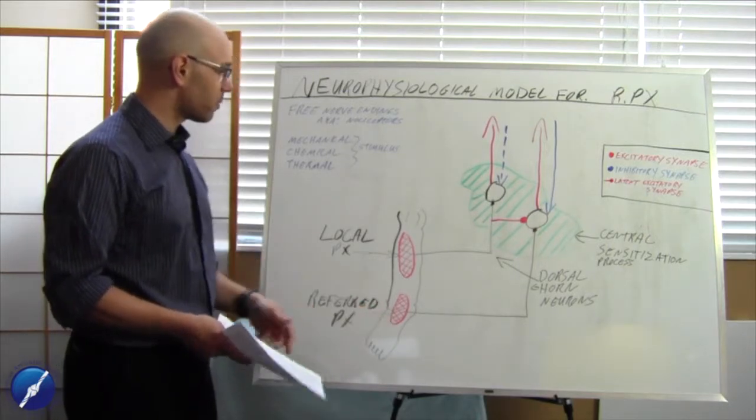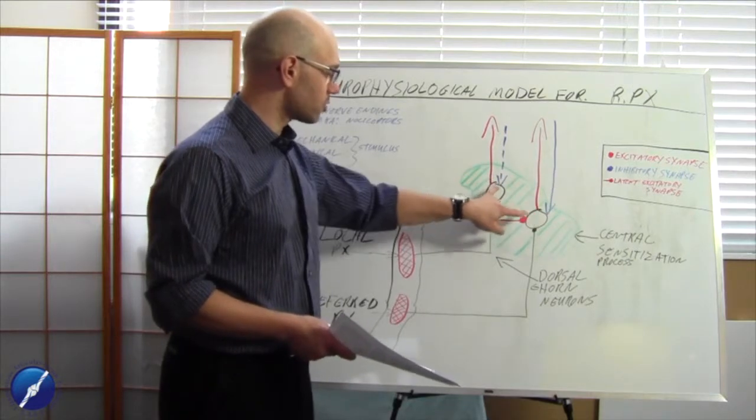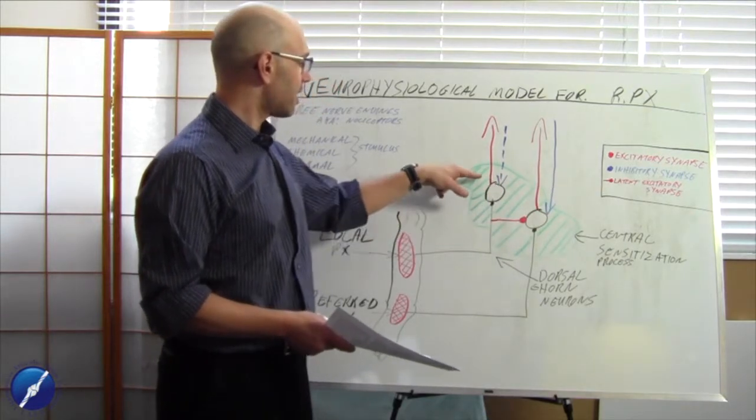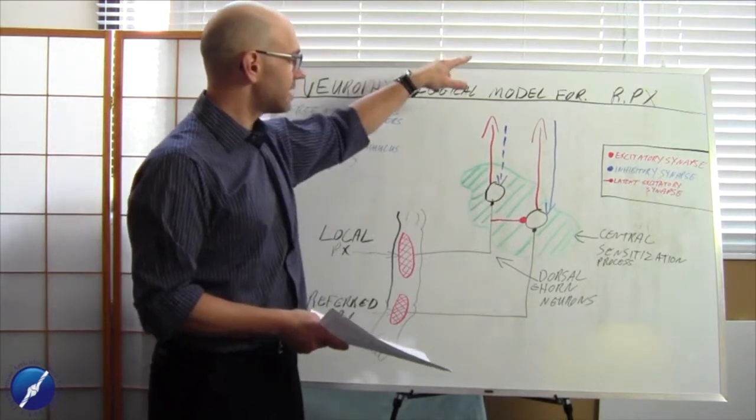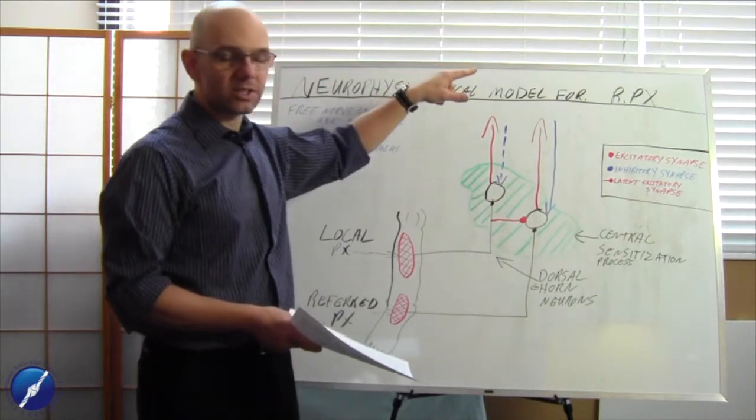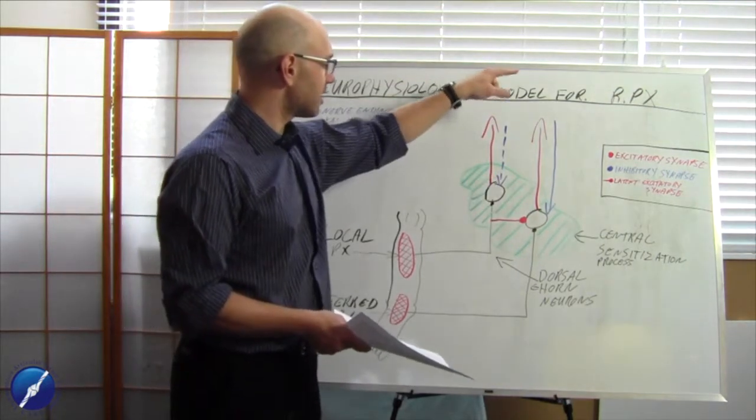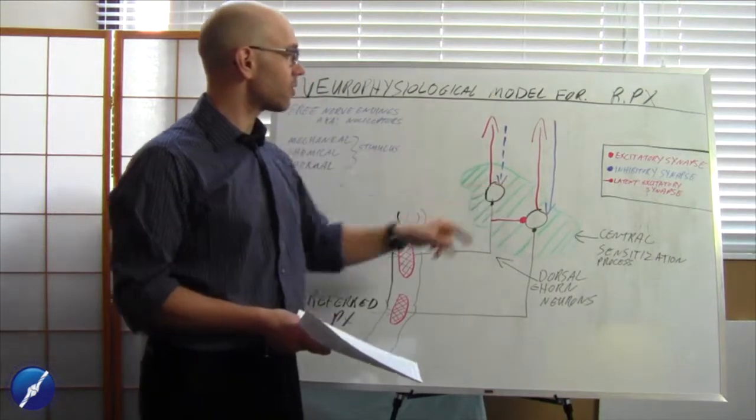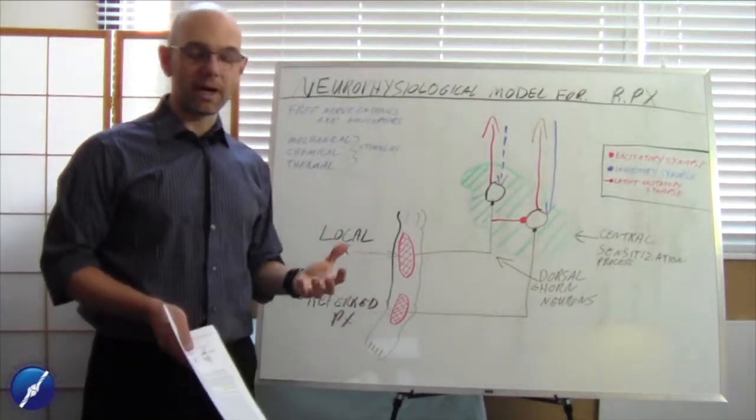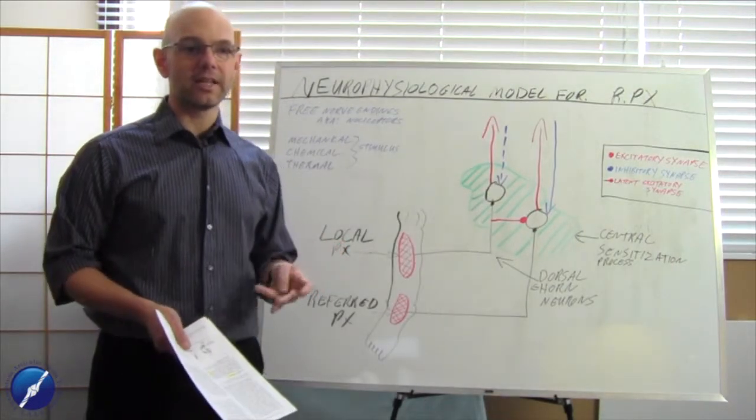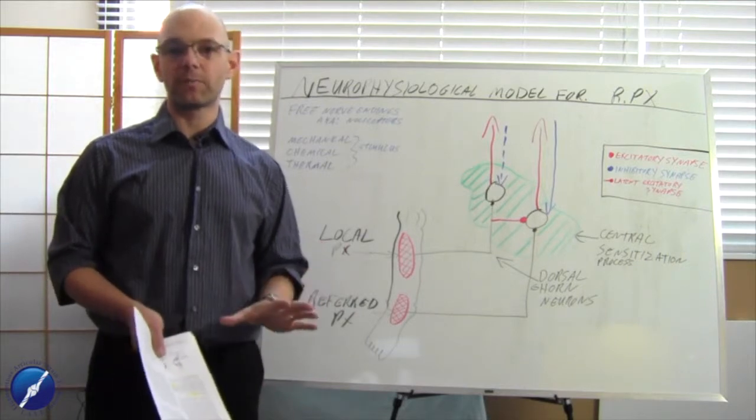So what we have is, we have, this is a leg by the way, it's a very cartoonish drawing of a leg. We have the first site which is local pain, we have the lower site which is the referred pain, we have a green area which surrounds these two dorsal horn neurons, and we have these red arrows that connect the dorsal horn neurons and also send messages, danger messages up to the brain.